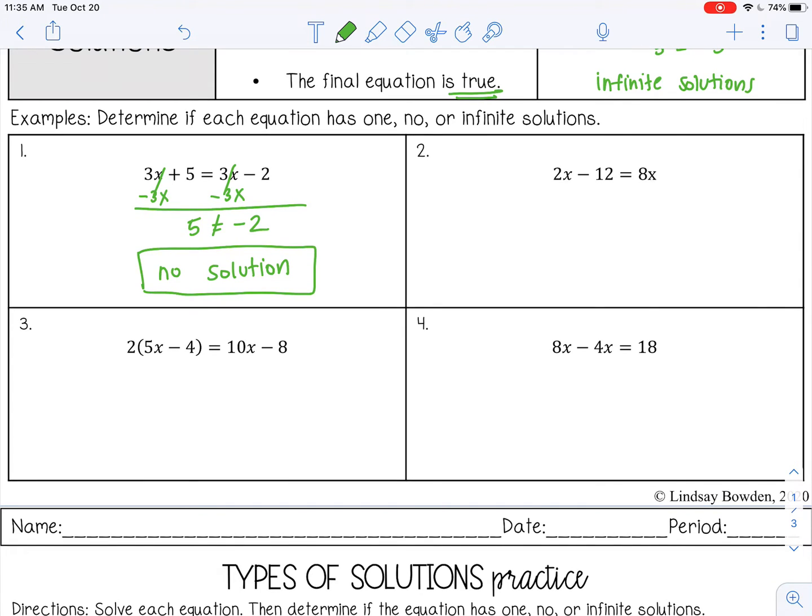All right, next, I'm going to subtract 2x from both sides. So I have negative 12 equals 6x. And then divide by 6 on both sides. So that would be negative 2 equals x, or you can write it x equals negative 2. So that has one unique solution.